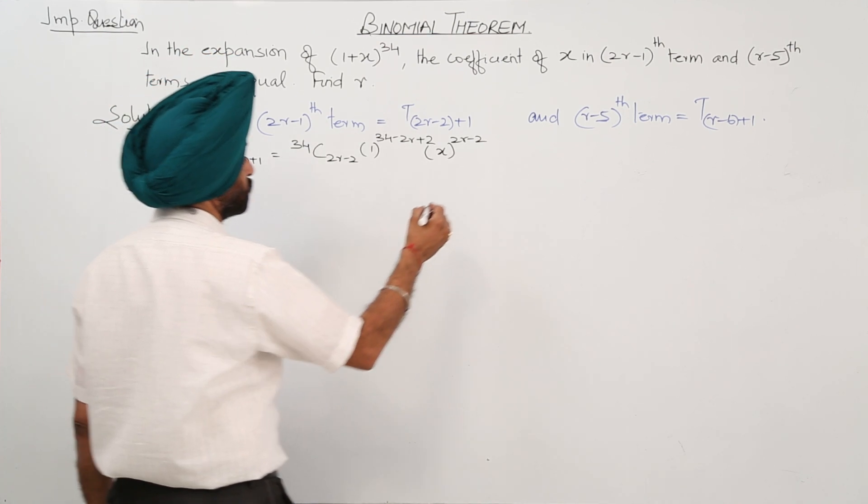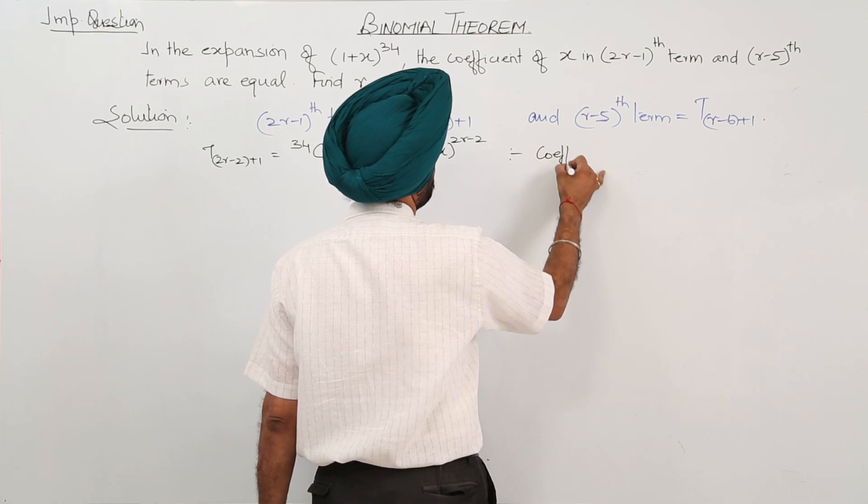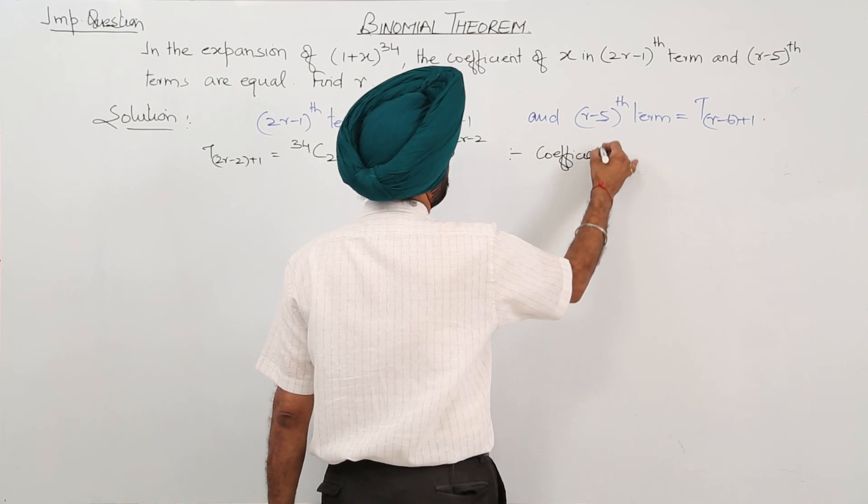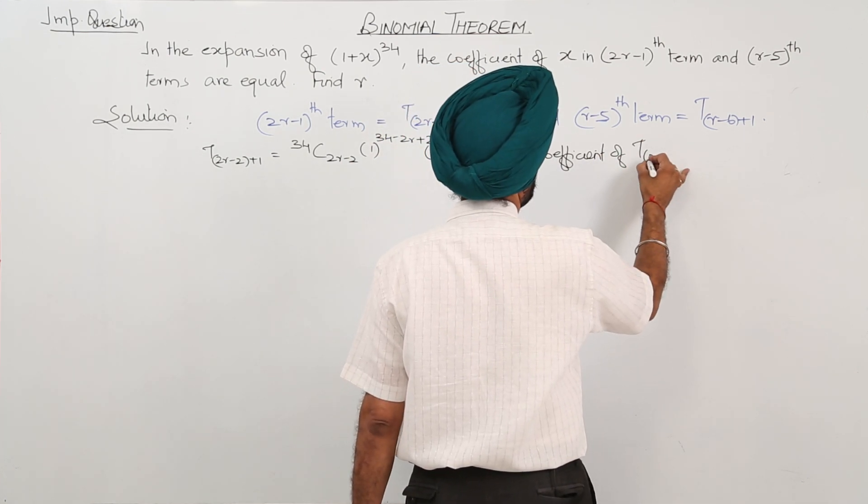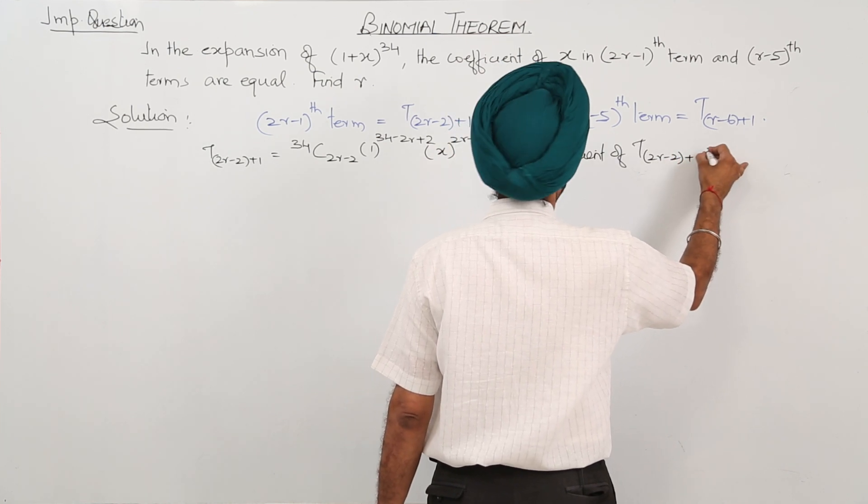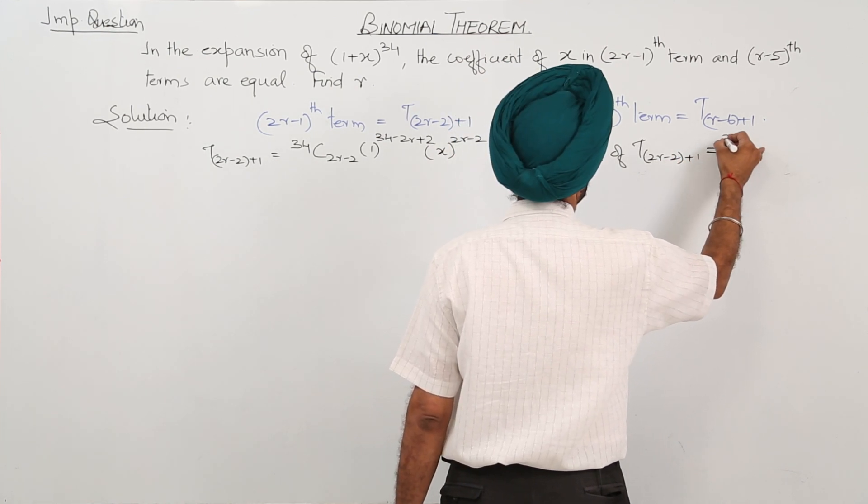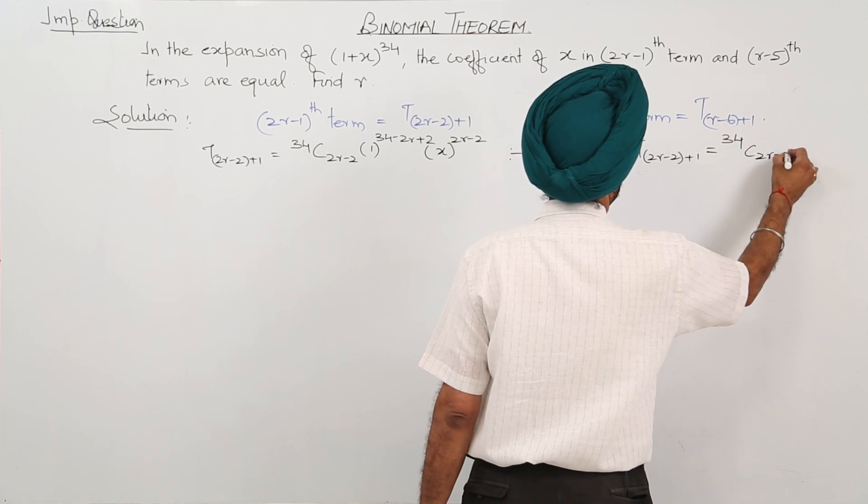The coefficient of T_{2r-2+1} is equal to 34C_{2r-2}.